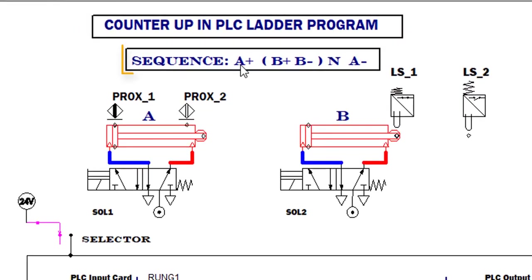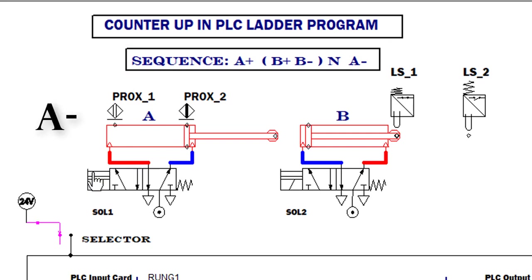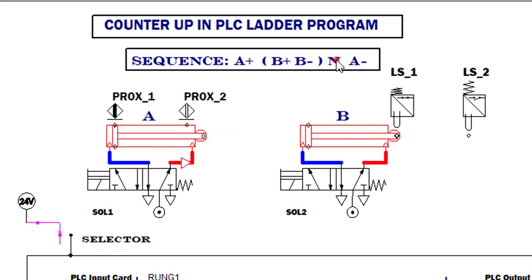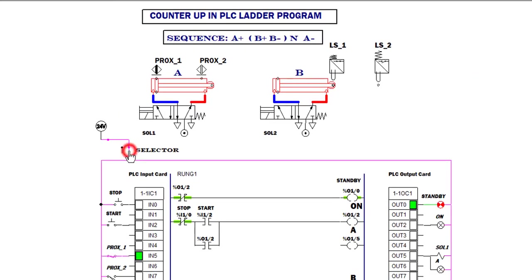We're going to complete this sequence. A-plus means the positive stroke for cylinder A, and A-negative is the negative stroke. N stands for the number of strokes needed by cylinder B before cylinder A goes back to the initial position.